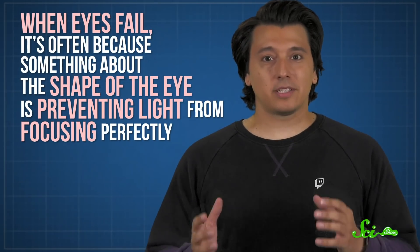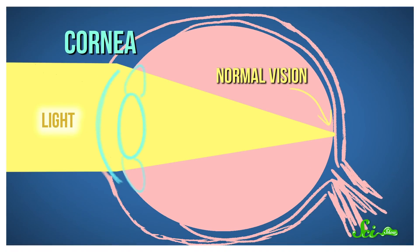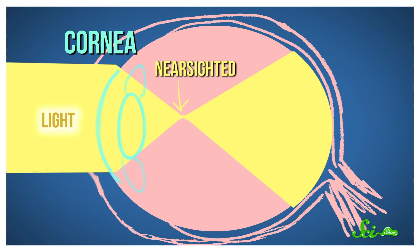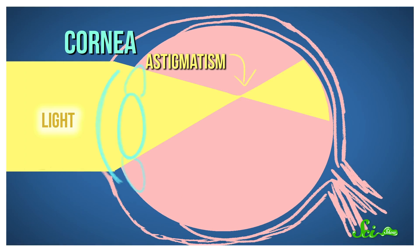When eyes fail, it's often because something about the shape of the eye is preventing light from focusing perfectly. Like if your eye is too long or too short, or if the curve of the cornea—that clear part at the front of your eye—isn't just right, light can get focused onto the wrong spot. That makes people nearsighted, or farsighted, or causes astigmatism. These are often problems glasses can fix. But eventually, doctors began looking for more permanent solutions.